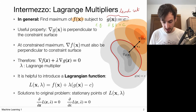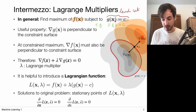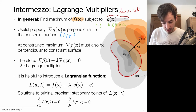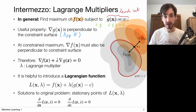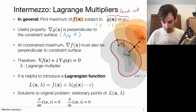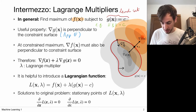The Lagrange multiplier method provides a way to find the point that takes the maximum value of f(x) while lying on the constraint level set. A key property is that the gradient of g(x) — the gradient of the function defining the constraint — is always perpendicular to the constraint level set. This is a property of level sets, also discussed in appendix E of Bishop's book. Wherever we look on the level set, the gradient of g is perpendicular to it.